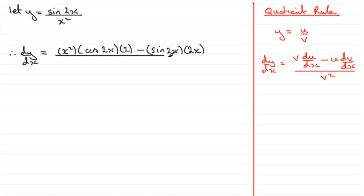And we divide all of this by v squared. v being the bottom of the fraction, and we square it. So x squared, all squared. All we need to do is just tidy this up now.